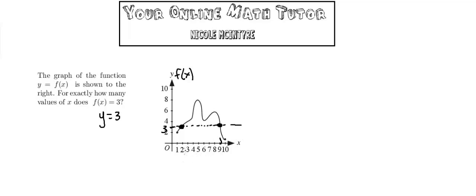So that means when x equals roughly 2 or x equals roughly 9, the function has a value of y equals 3.